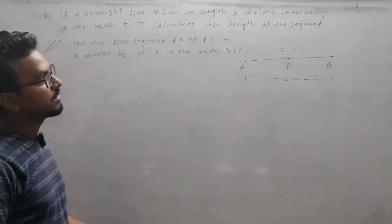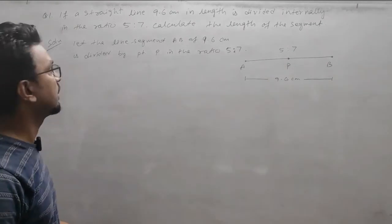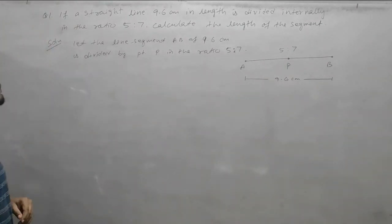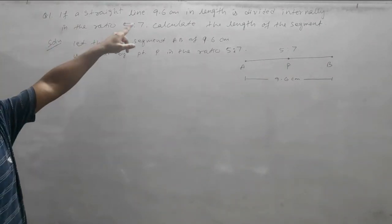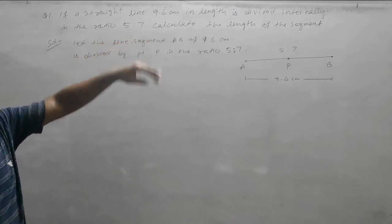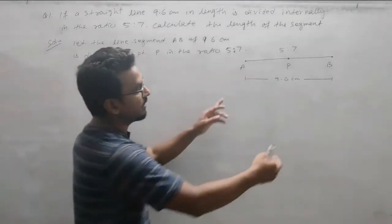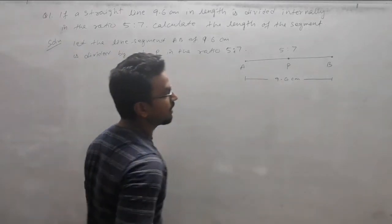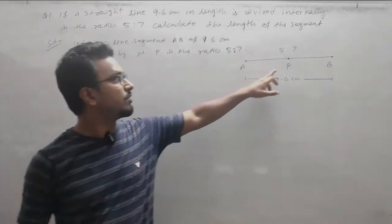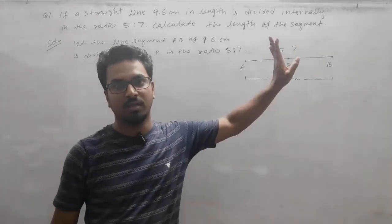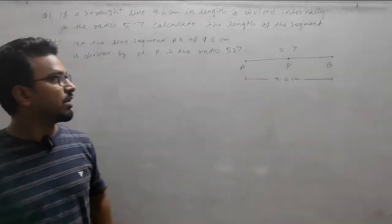This is a question from Chapter 8 Geometry of Class 8. The first question is: if a straight line 9.6 centimeters in length is divided internally in the ratio 5:7, calculate the length of the segment. The line segment AB is 9.6 centimeters, and internally at point P it is divided in the ratio 5:7.